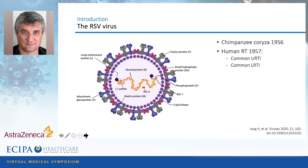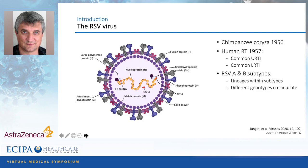The virus was first identified in chimpanzees with runny noses in 1956. About a year later, we realized the same virus was involved in upper airway infections in children, as well as lower respiratory tract infections, and later discovered it also occurs in adults. The virus has two subtypes, an A subtype and a B subtype, and within each subtype we have lineages with subtypes.